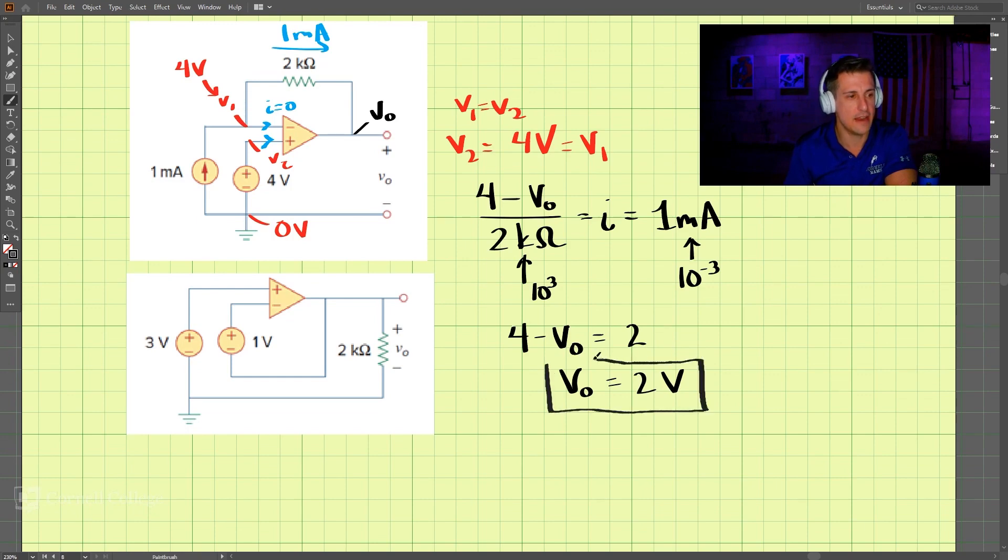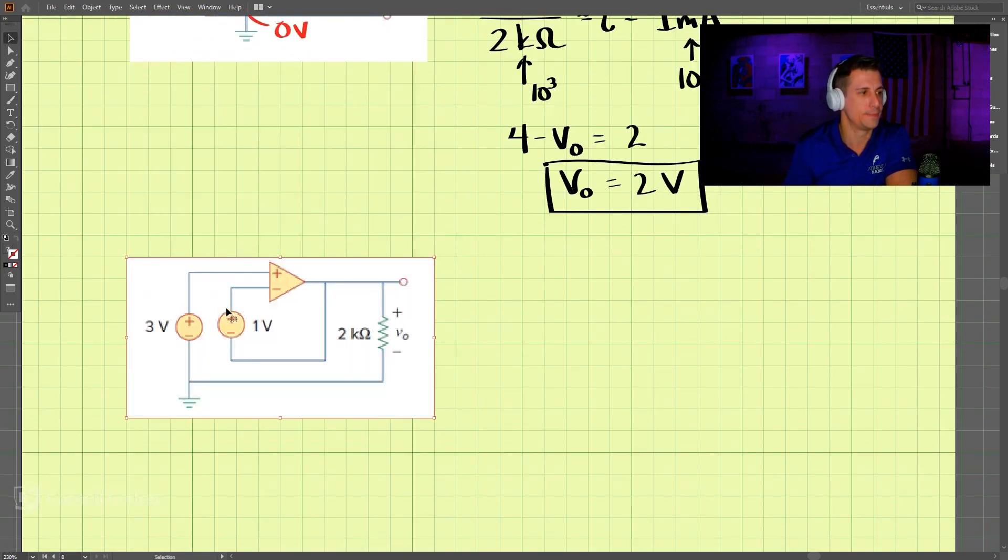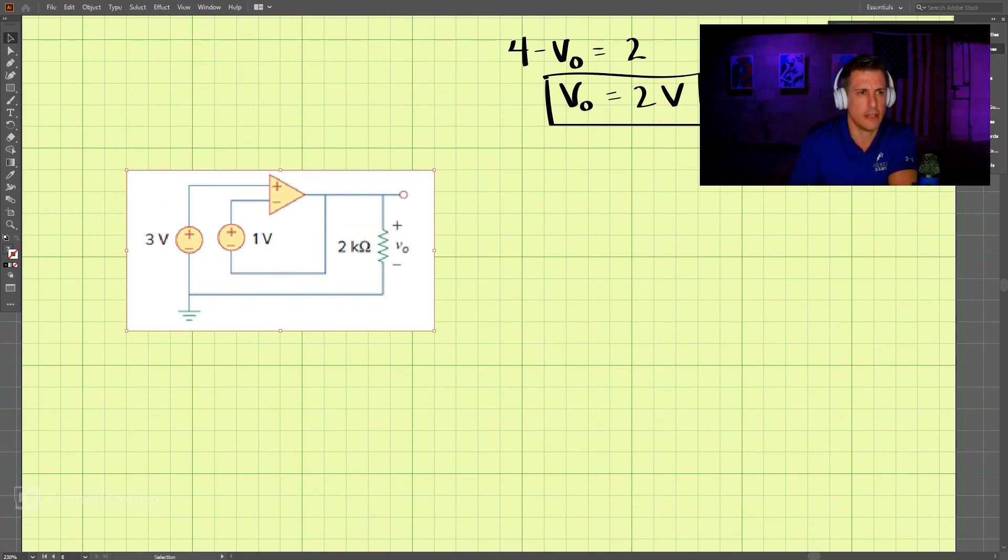That is the solution for the first one. Let's do the second one. Let's take a look at the voltages. We know here since this is connected to ground, this voltage v1 is equal to three volts.